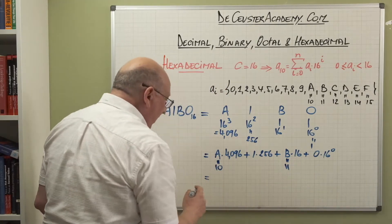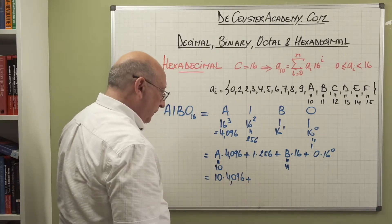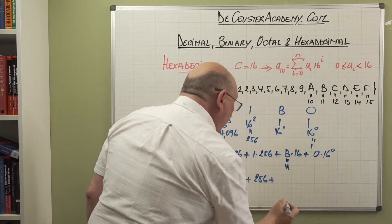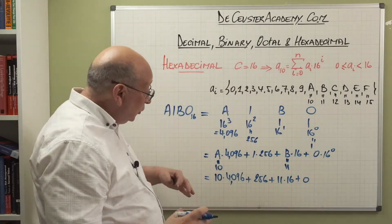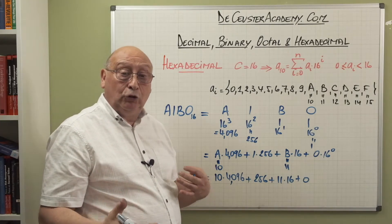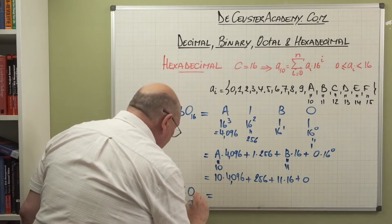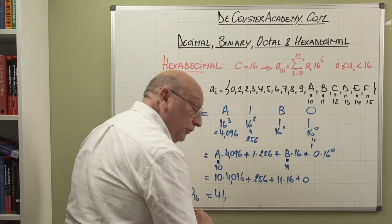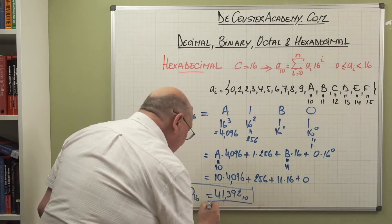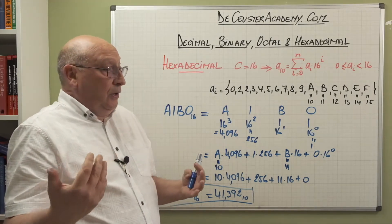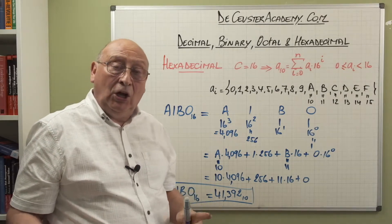Replacing the letters with their values — A equals 10, B equals 11 — we get: 10 times 4096 plus 256 plus 11 times 16 plus 0. When you do the calculation with a calculator, Excel, or a program for transforming these numbers, you find that hexadecimal A1B0 base 16 equals 41,392 as a decimal number. That's the last of the different number systems we're defining: decimal, binary, octal, and hexadecimal.